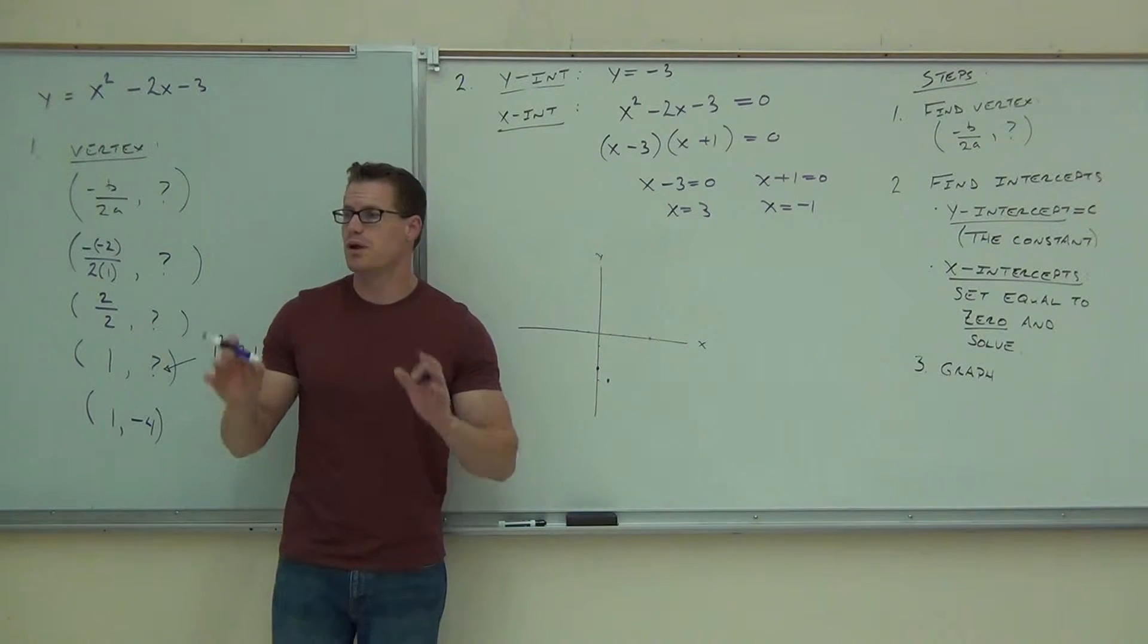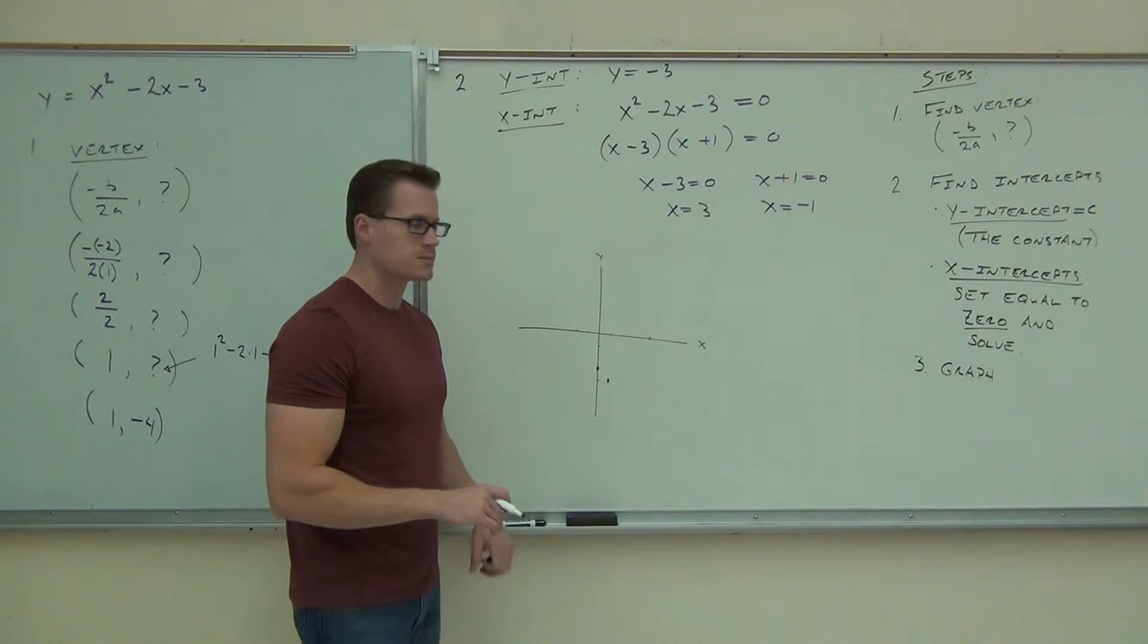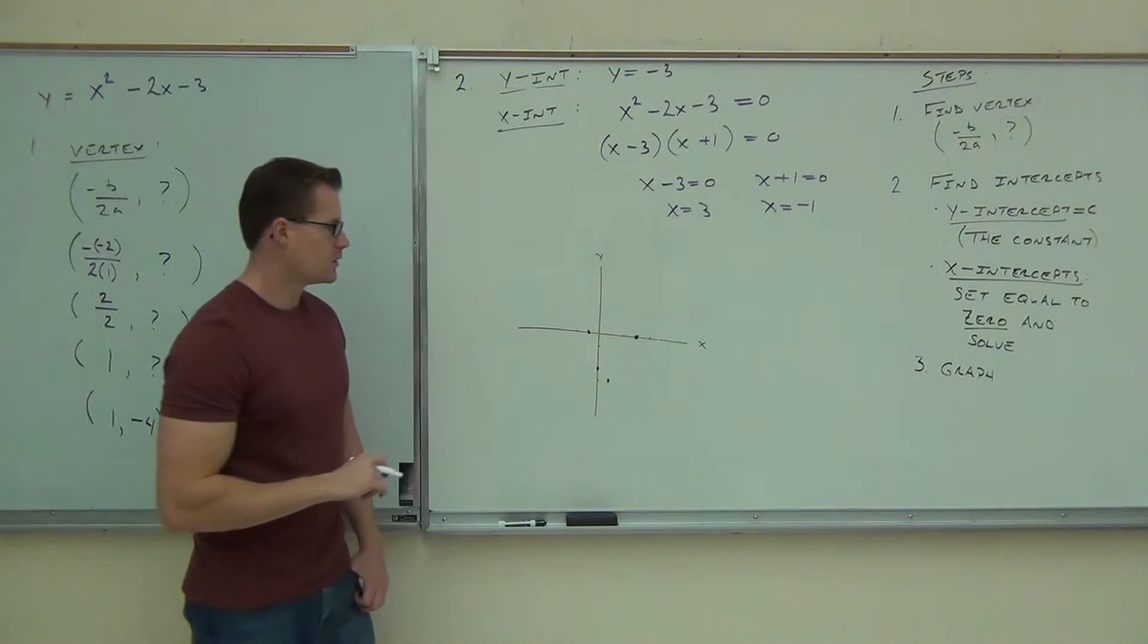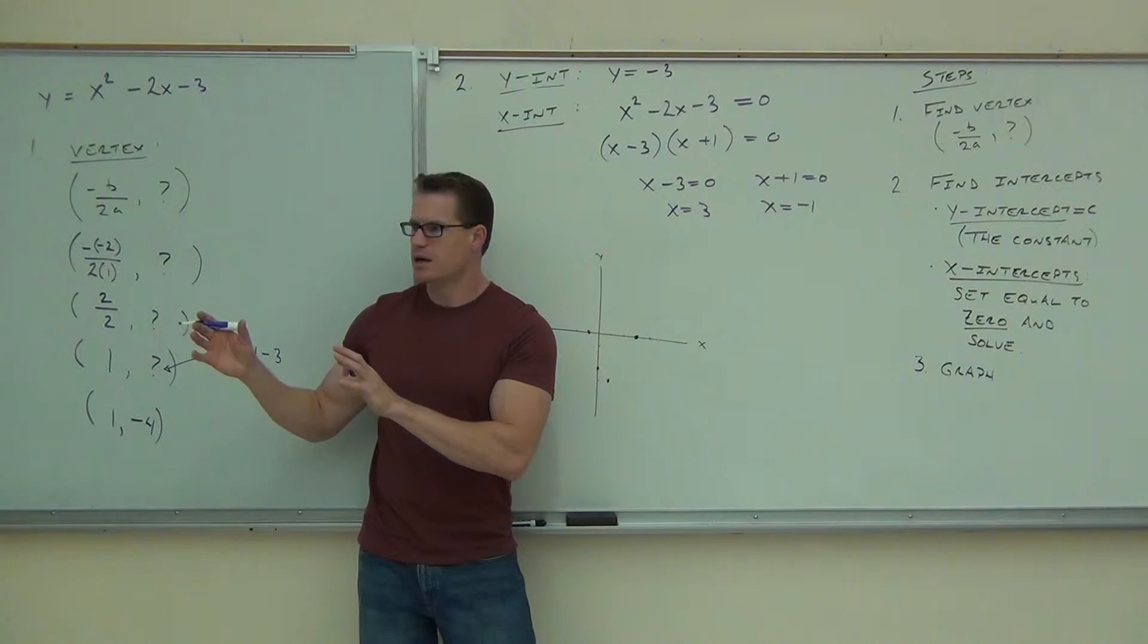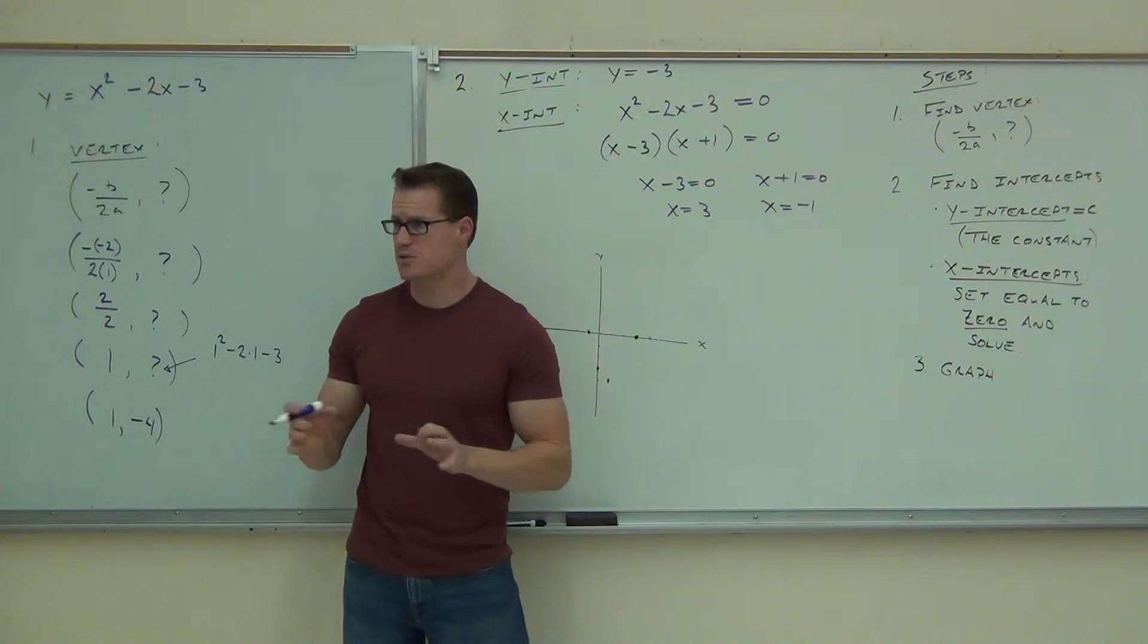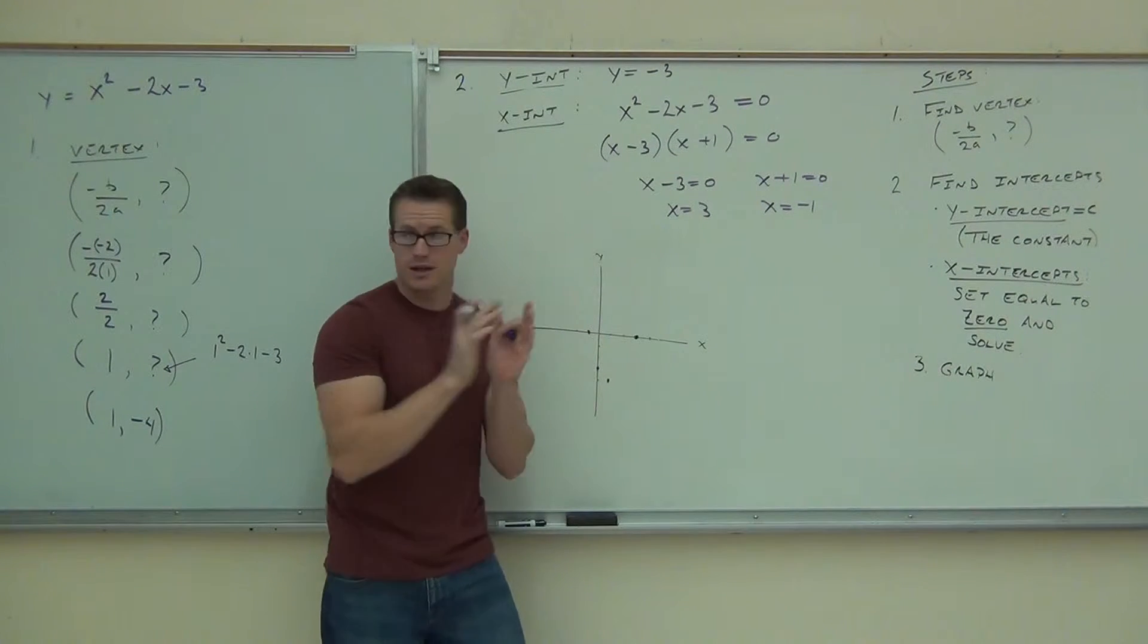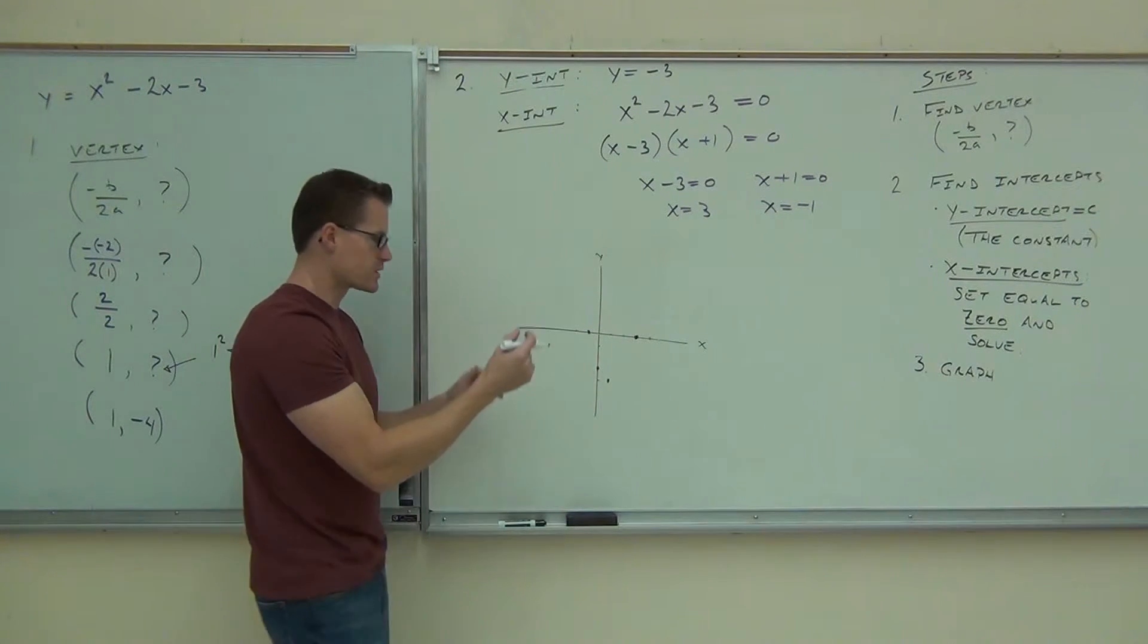Lastly, we have our x-intercepts. Go ahead and plot those if you haven't done that already. We've got x equals 3 and x equals negative 1. Does it look like how it should look? At the very beginning, we said it's going to be an upward facing parabola. Is it upward facing? Good. If you got downward facing, you probably did something wrong, right? Is it really narrow or really wide or is it more normal looking? Normal. More normal and it should be normal looking. So this is probably the appropriate picture for us.